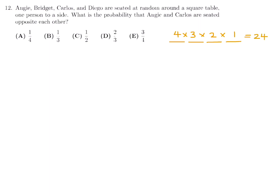The quicker way: at a round square table, Angie and Carlos are opposite each other only when they are two seats apart. For example, if Angie is here and Carlos is directly across, the other two seats are fixed for Bridgett and Diego.